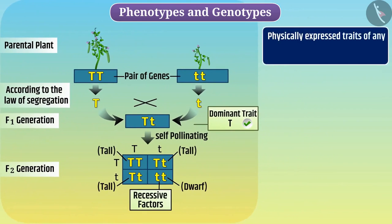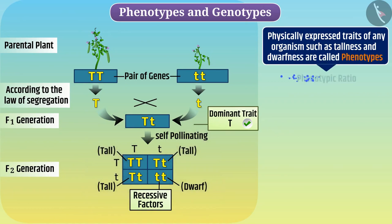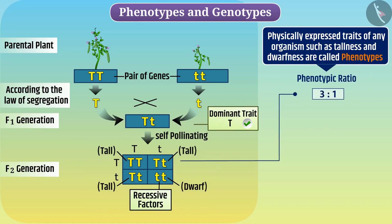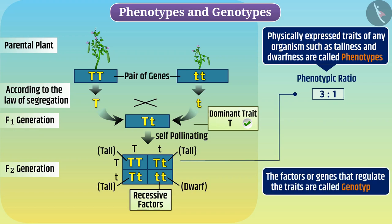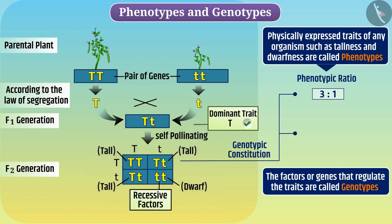Physically expressed traits of any organism — such as tallness and dwarfness — are called phenotypes, and the ratio of these traits is called the phenotypic ratio. Here, the phenotypic ratio is 3 is to 1. Similarly, the factors or genes that regulate the traits are called genotypes. If we talk about the genotypic constitution of these plants, we get their genotypic ratio accordingly.